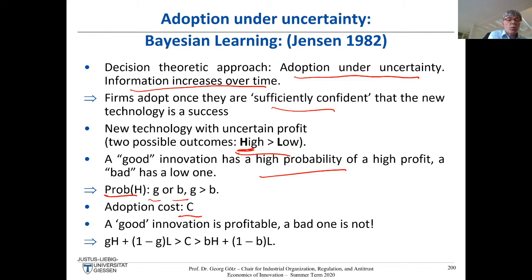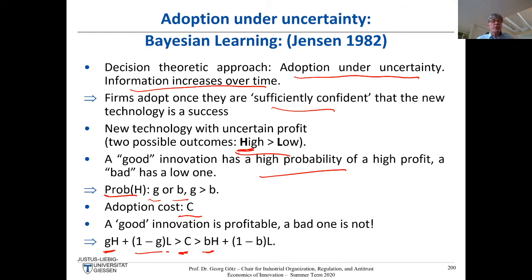With a good innovation you get a high profit with probability G and a low profit with probability 1-G, and the assumption is that this expected value exceeds the cost of adoption. But if B is only 25%, you get a high profit with only 25% chance, and the low profit with 75% chance, which is probably not enough to cover adoption costs. Everyone knows these probabilities but doesn't know whether the innovation is actually good or bad.